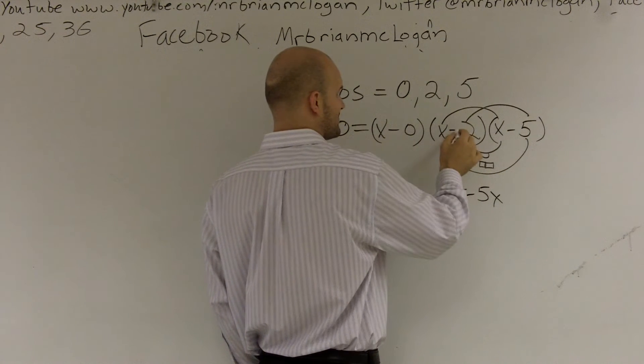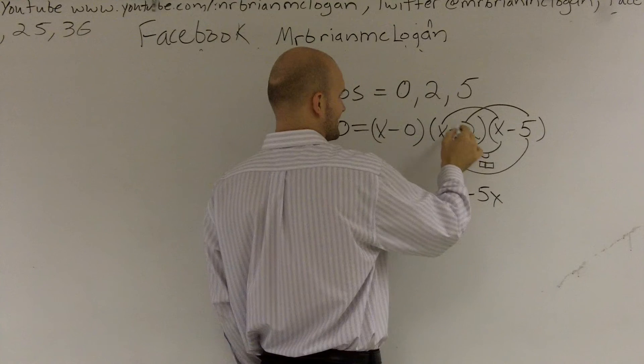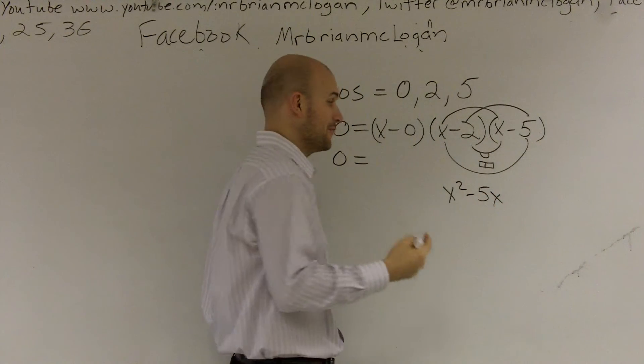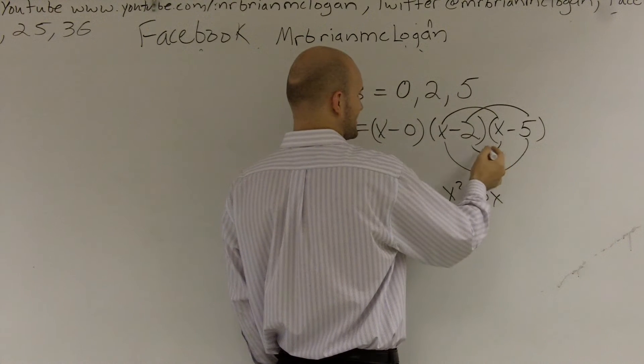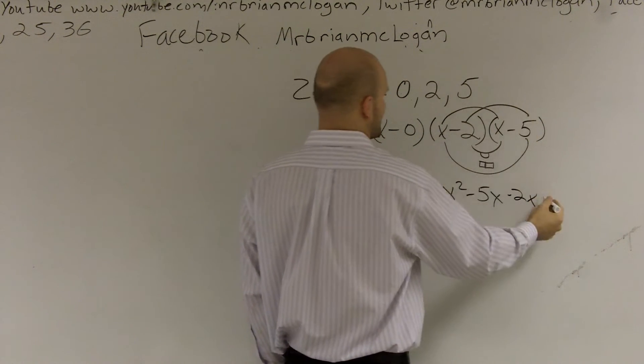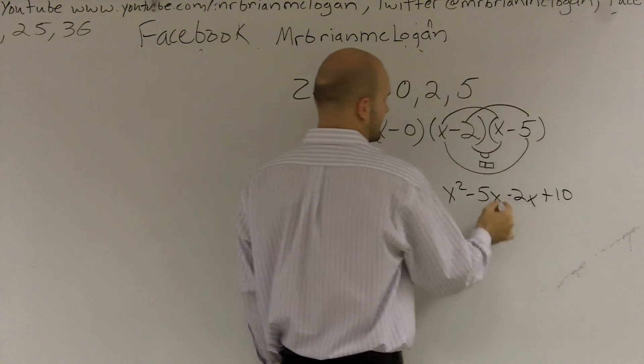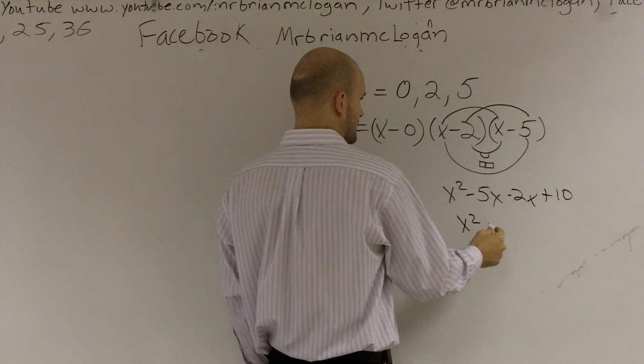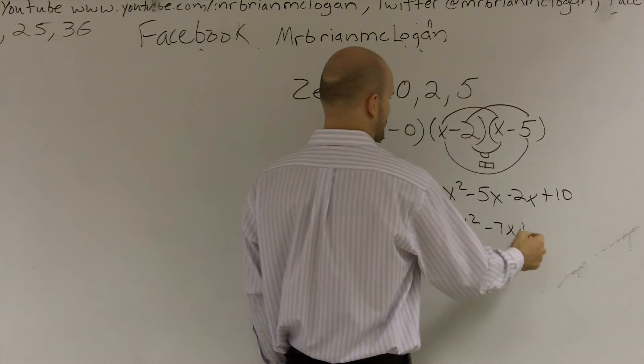x times x is x squared. x times negative 5 is negative 5x. I was actually doing the FOIL technique. And then let's do negative 2 times x is negative 2x. And negative 2 times negative 5 is a positive 10. These combine to give you x squared minus 7x plus 10.